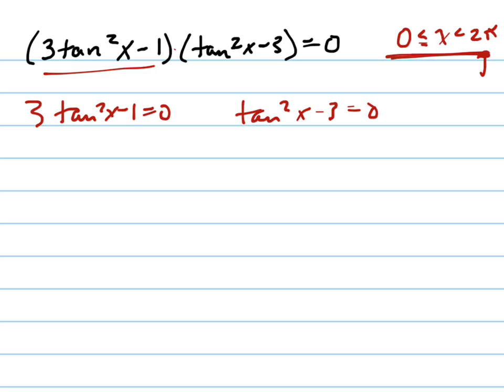Now I solve each one of these. I'm going to skip a couple steps. So tan x equals ±1/√3, and tan x equals ±√3. Notice that I put the plus or minus sign in front of it because I'm taking the square root. Whenever you take the square root of the problem, you need to put the plus or minus sign in. That's a common mistake people make.